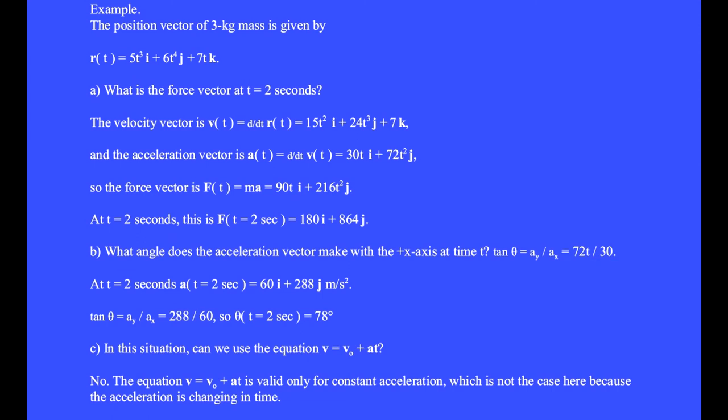At t = 2 seconds, the acceleration vector is 60i plus 288j meters per second squared. And tan θ = ay/ax = 288/60, so at t = 2 seconds, θ is 78 degrees.